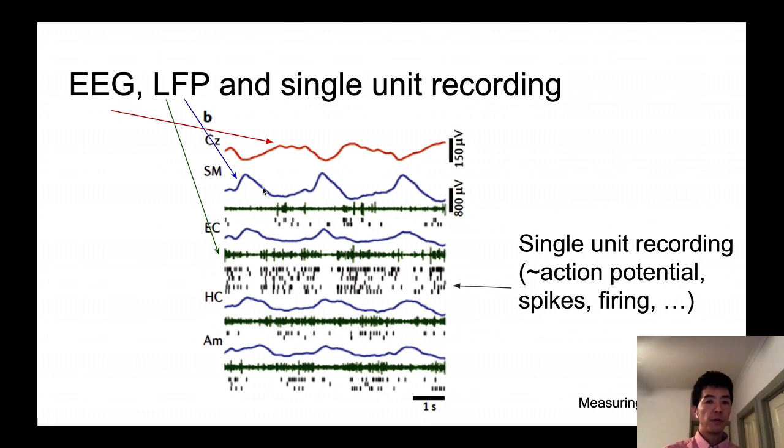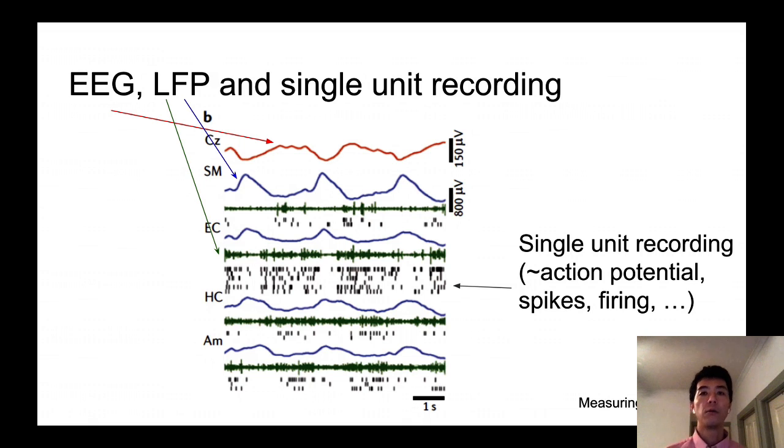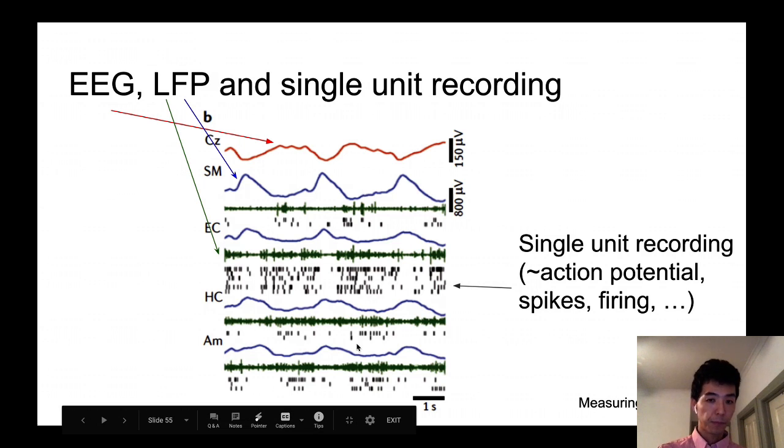And then these blues are the ones that are corresponding to local field potential recording inside the brain. SM corresponds to somatomotor area, EC is the entorhinal cortex, HC is the hippocampus, famous for its importance in memory formation, and the AM is the amygdala. Some of you will be presenting papers on the patient who does not have an amygdala, and this is the recording from amygdala.